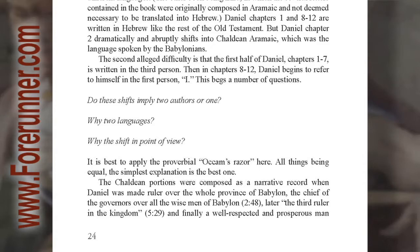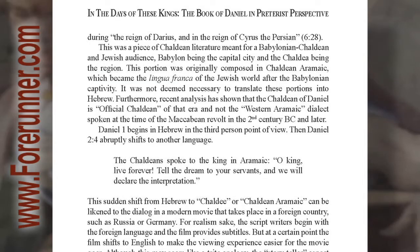Do these shifts imply two authors or one? Why two languages? Why the shift in point of view? It is best to apply the proverbial Occam's razor here. All things being equal, the simplest explanation is the best one. The Chaldean portions were composed as a narrative record when Daniel was made ruler over the whole province of Babylon, the chief of the governors over all the wise men of Babylon (chapter 2, verse 48), later the third ruler in the kingdom (chapter 5, verse 29), and finally a well-respected and prosperous man during the reign of Darius and in the reign of Cyrus the Persian (chapter 6, verse 28).